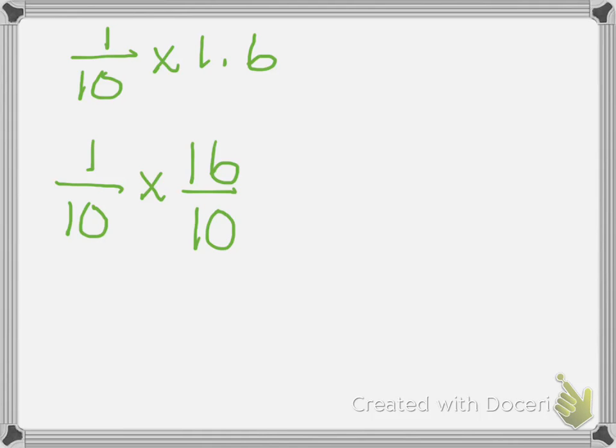Now if you're a little unsure how to do that, 1 and 6 tenths would be written like this as a fraction. So if I wanted to turn this into an improper fraction, I would multiply 1 times 10, which is 10, and then add my 6 and I get 16 tenths.